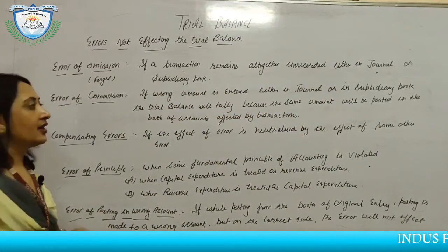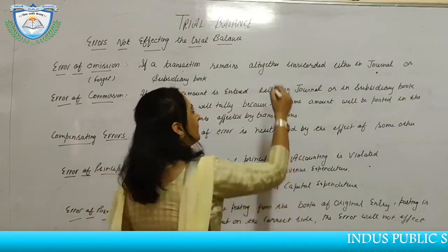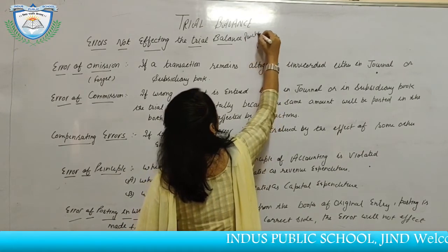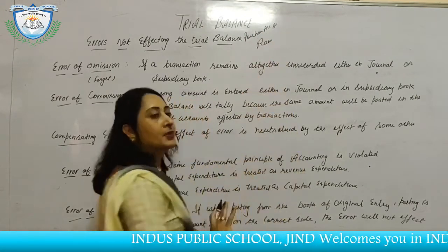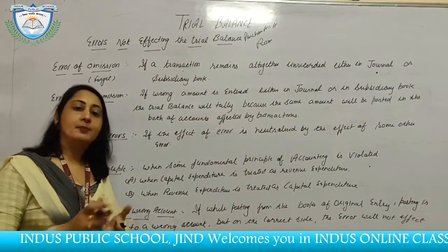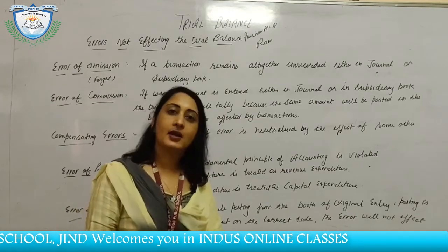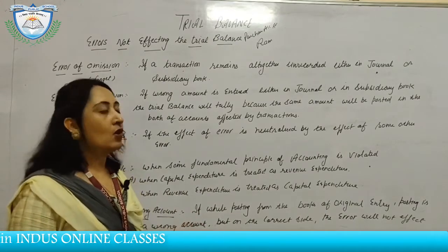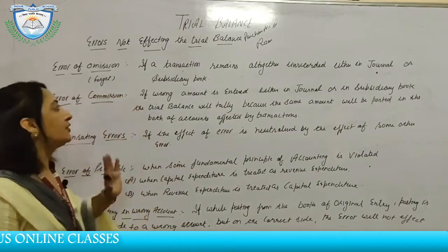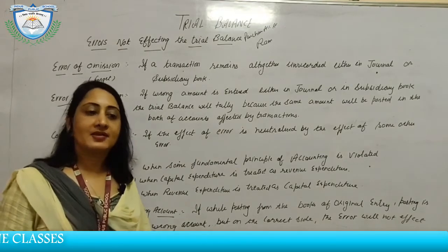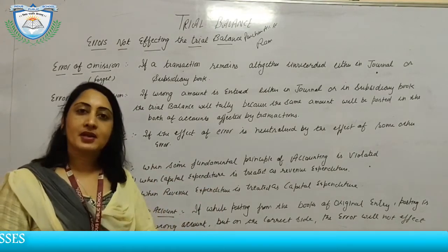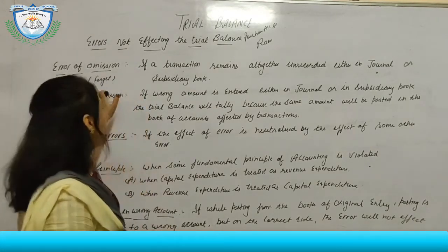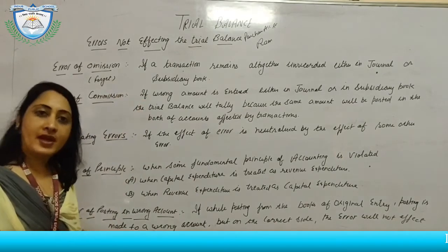For example, we have purchased goods from Rang. The entry would be: Purchases account debited to Rang. But we totally forgot to record it in the books of original entry or subsidiary book. Since neither debit nor credit was posted, the trial balance total will still tally. So an error of omission does not affect the trial balance.